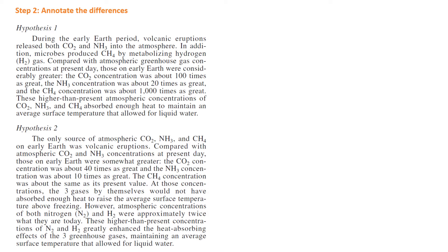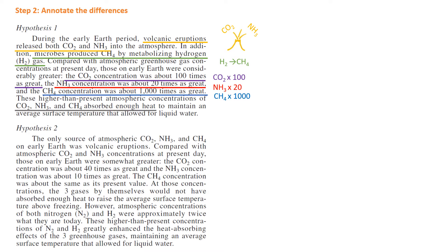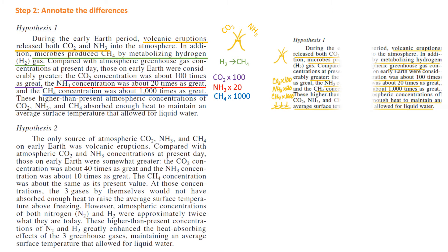Step two is to annotate the differences. Go through and see what each individual believes. So hypothesis one: volcanic eruptions released both CO2 and NH3. I like to draw pictures and make notes off to the side. Microbes produced CH4 by metabolizing hydrogen, so hydrogen metabolizes into CH4. CO2 concentration was about 100 times as great, NH3 concentration about 20 times as great, CH4 concentration about 1000 times as great. And then the CO2, NH3, and CH4 all absorbed enough heat to keep the liquid water on the surface. When I did it on my own just annotating, I just write it out to the side. That's what it looks like, so a little bit different than on the computer but not much.